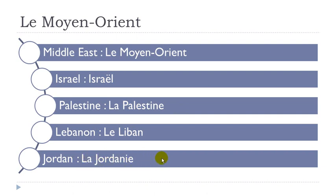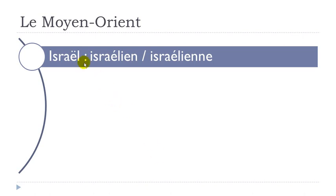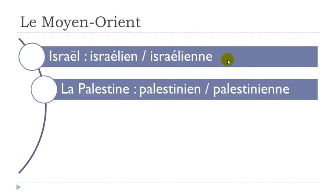And now we'll see the nationalities. So for Israël, I will put the masculine form and the feminine form. Masculine: Israëlien. Feminine: Israëlienne. And then: Palestinien. Feminine form: Palestinienne.